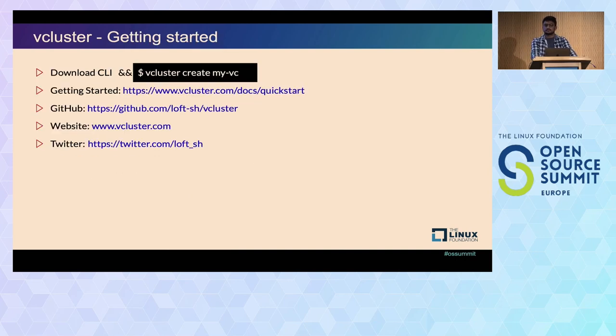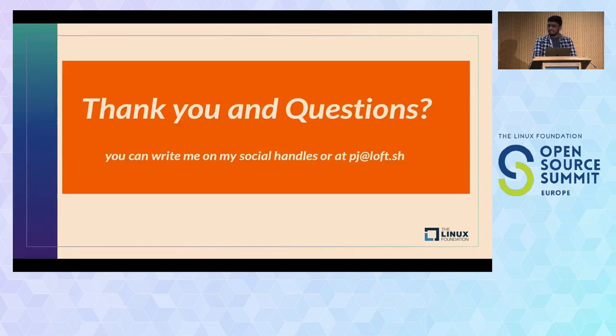How should we get started? It's easy. You just have to go to vcluster.com, download the binary, and do vCluster create and your cluster name. The documentation is very well written and easy to understand. You can find vCluster on GitHub and it's open source, so you can also contribute to it. You can test it, you can try to break it, and please do break it so we will improve it. And that's all, so if anyone has any question. Thank you so much.